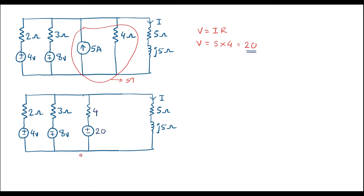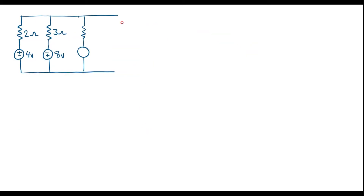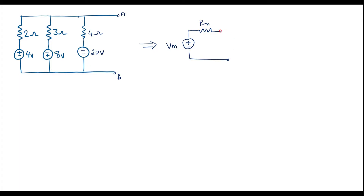Now we can easily apply Millman's theorem. In Millman's theorem, the branch in which current is flowing must be removed — we make that branch open. Here let me consider node A and node B; this is branch AB. I will make A and B open. So this is A and this is B. Here this is 4 ohm and the magnitude is 20 volts. The Millman's equivalent circuit has a resistor RM and a voltage source Vm in series.